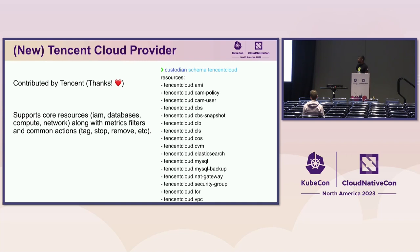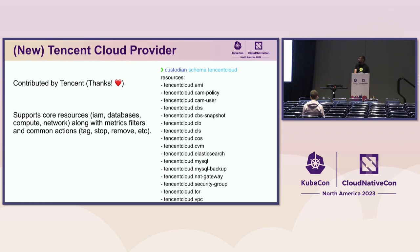The other new provider is Tencent Cloud, contributed by Tencent. It supports a fuller variety of resources including several databases, network, container registries, and object storage — though the naming conventions can be confusing; for example, 'COS' is actually object storage. This provider is also in use, but does not yet support event-based policies.